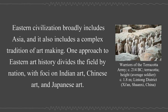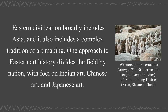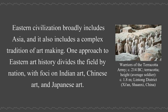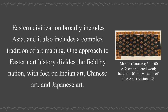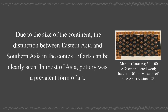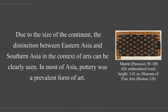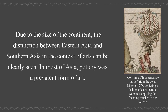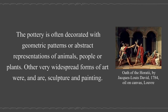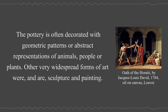Eastern civilization broadly includes Asia, and it also includes a complex tradition of art making. One approach to eastern art history divides the field by nation, with foci on Indian art, Chinese art, and Japanese art. Due to the size of the continent, the distinction between eastern Asia and southern Asia in the context of arts can be clearly seen. In most of Asia, pottery was a prevalent form of art, often decorated with geometric patterns or abstract representations of animals, people, or plants. Other very widespread forms of art were and are sculpture and painting.